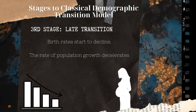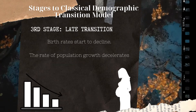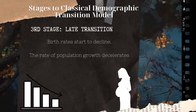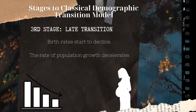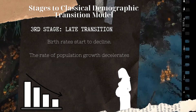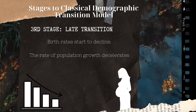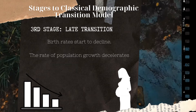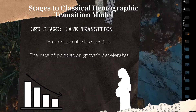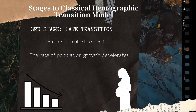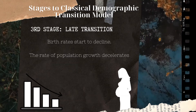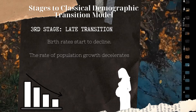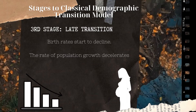The third stage of the classical demographic transition model is called the late transition. Fertility rate drops and tends to equate the death rate so that the growth rate of population declines. As growth increases momentum and people cross the subsistence level of income, their standard of living improves.